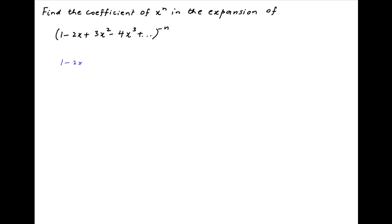Start by noticing that 1 minus 2x plus 3x squared minus 4x cubed plus and so on is the binomial expansion of (1 + x) raised to the power minus 2.